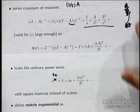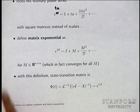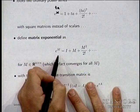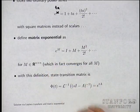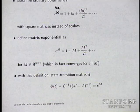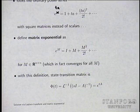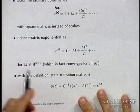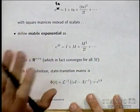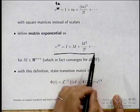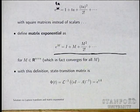We simply define the matrix exponential: e to the M equals I plus M plus M²/2! plus M³/3! plus ... Just as the power series for the ordinary scalar exponential converges for any number, this series converges for any square matrix M. For non-square matrices it makes no sense — M² would require multiplying a non-square matrix by itself, which fails immediately.